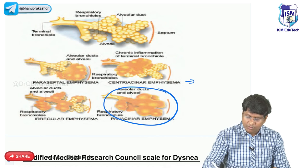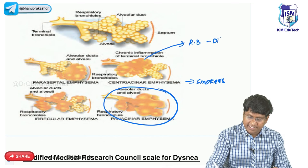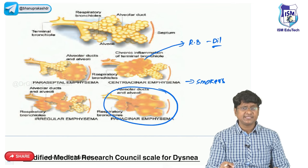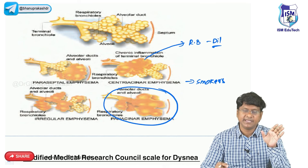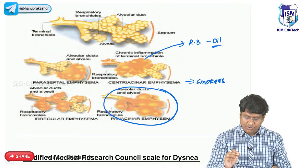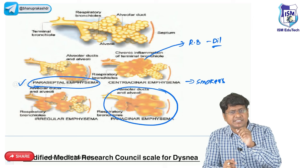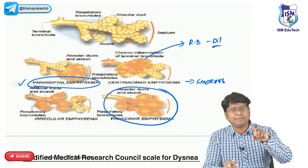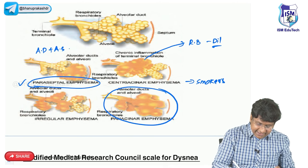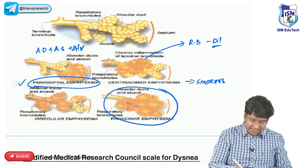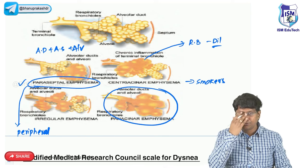In centriacinar emphysema (common in smokers), only the respiratory bronchioles are abnormally irreversibly dilated - the distal parts (alveolar sac and alveoli) are spared. In paraseptal emphysema, the distal acinus - alveolar duct, alveolar sac, and alveoli - is abnormally irreversibly dilated, affecting the peripheral part of the lung. If these acini rupture, the individual may develop pneumothorax.